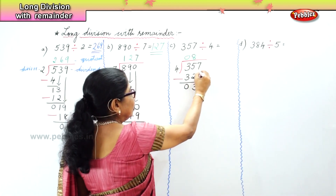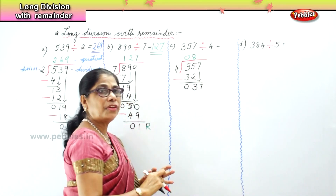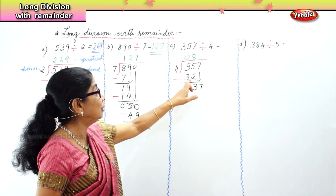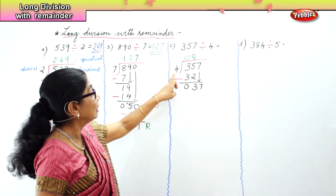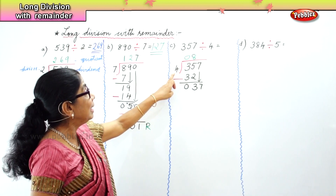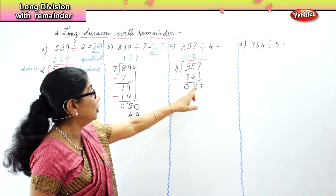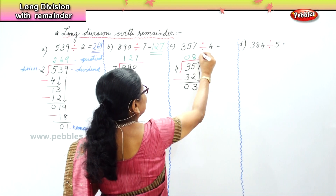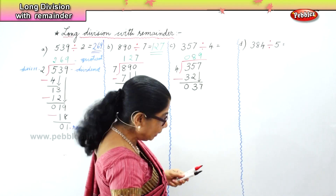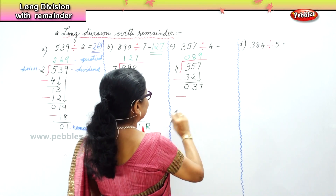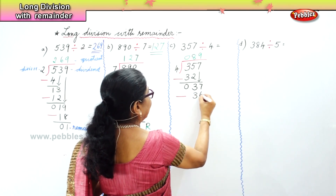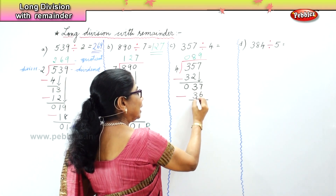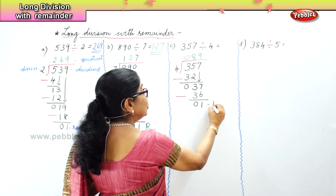Five take away 2 is 3, 3 take away 3 is 0. Bring the 7 down — now we have 37. Nine 4s are 36, so 4 goes into 37 nine times. Put 9 on top and write minus 36. Seven take away 6 is 1 — that is the remainder.